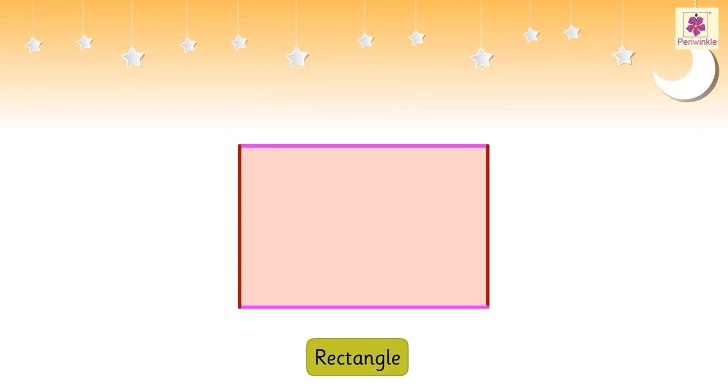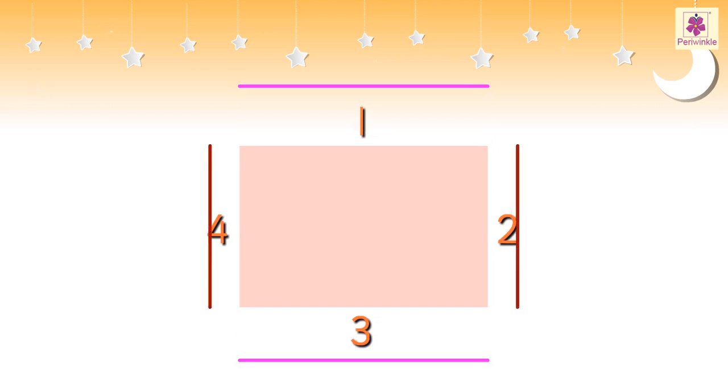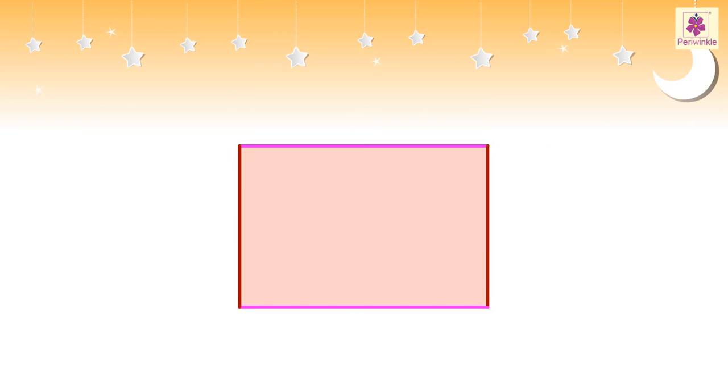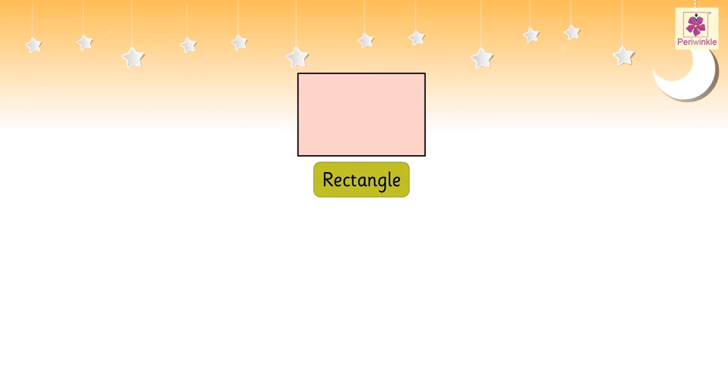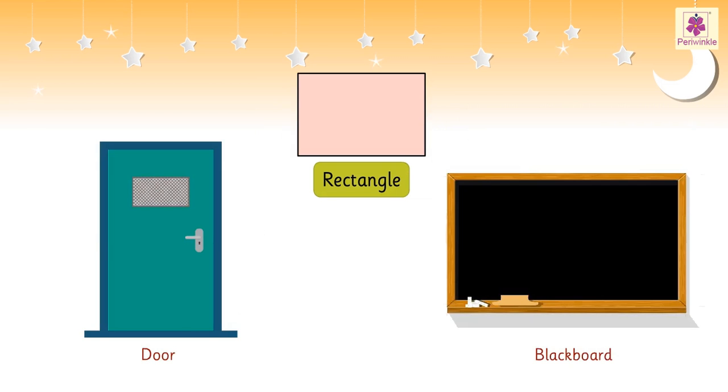This is a rectangle. A rectangle has four sides. The opposite sides of a rectangle are of equal length. Examples of a rectangle are a door and a blackboard.